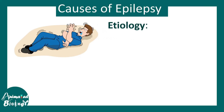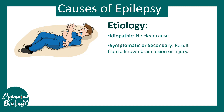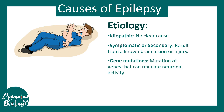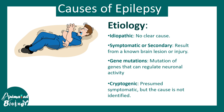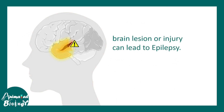The etiology of epilepsy could be idiopathic, meaning the clear cause is not known; symptomatic or secondary, for example epilepsy associated with brain injury or gene mutations; or cryptogenic, meaning it is presumed symptomatic but the cause has still not been identified.